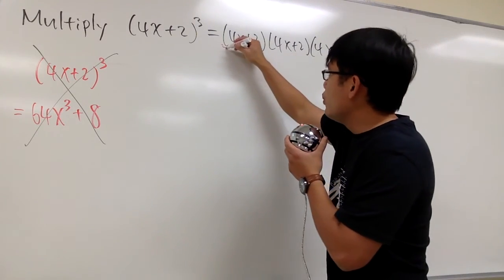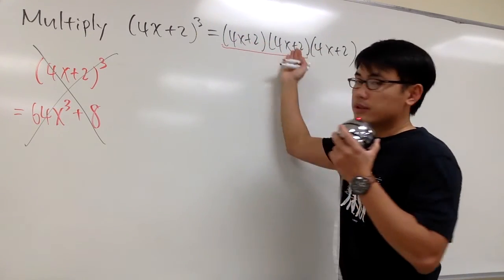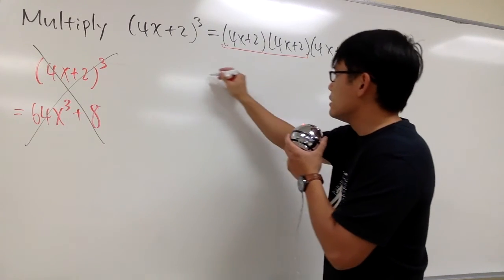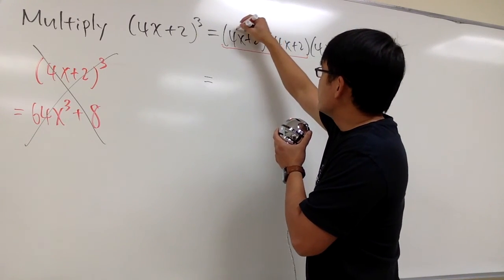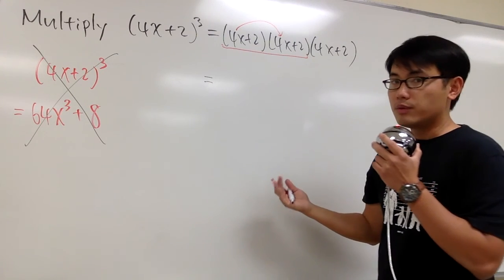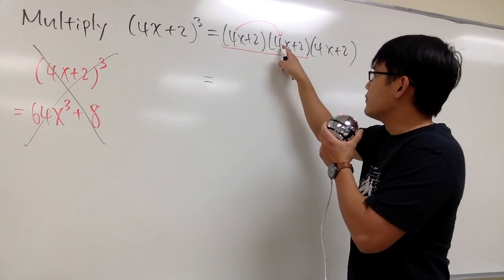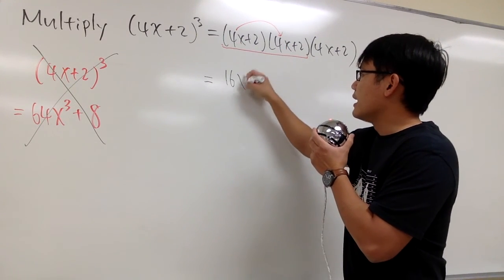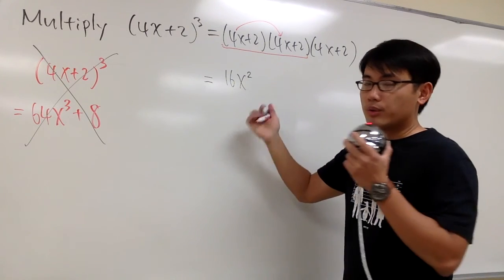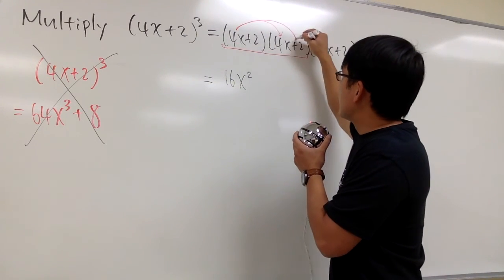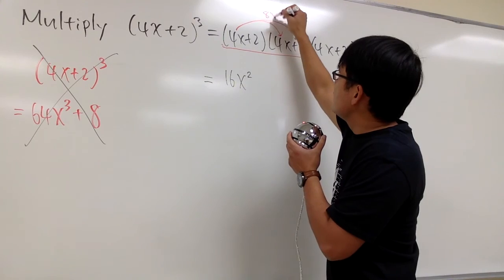We're just going to multiply this out. We'll first multiply the first two altogether. We take this, multiply this out. 4x times 4x, that's 16x squared. And then we continue. We see that 4x times 2, that will give us positive 8x.